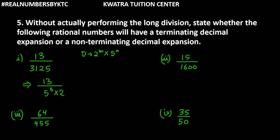Here we have 2 raised to power 0 and 5 raised to power 5. Therefore, this number is terminating.